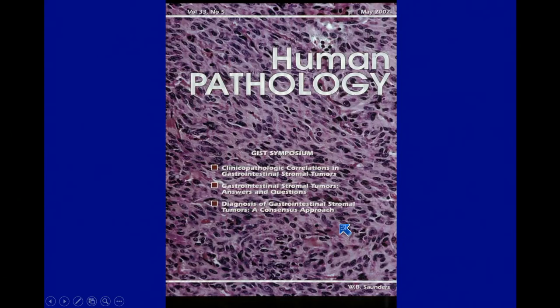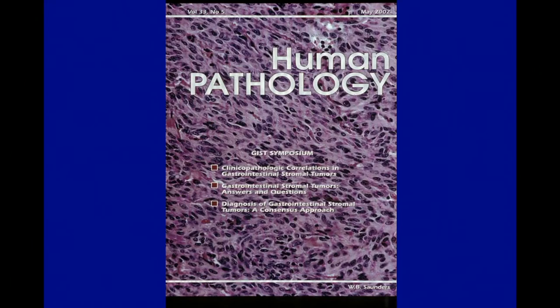Nobody really cared about GI stromal tumors until about the early 2000s. Back in the old days, they were actually considered and called leiomyomas and leiomyosarcomas. Then it became clear that these were something completely different than smooth muscle tumors. An entire edition of Human Pathology was dedicated to GI stromal tumors, and I'm going to give you some of the highlights from that edition.